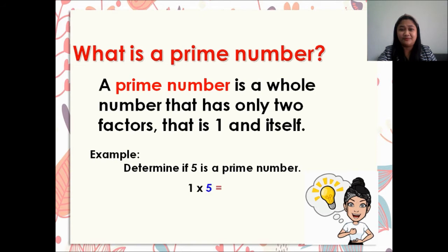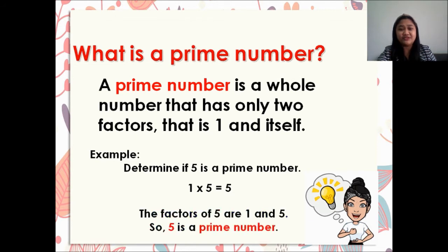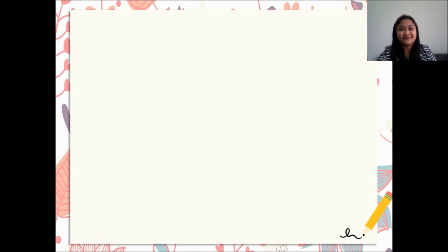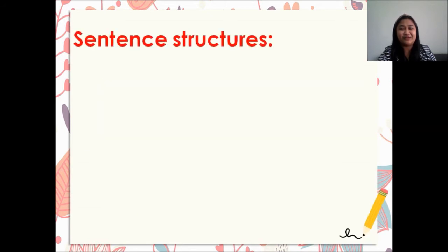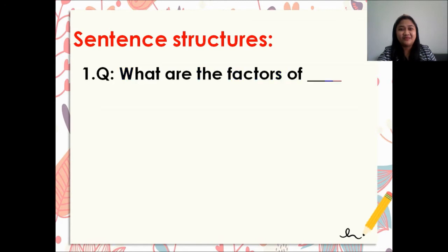So we have 1 times 5 is equal to 5, so the factors of 5 are 1 and 5. So 5 is a prime number. Alright, so let's have our sentence structure.